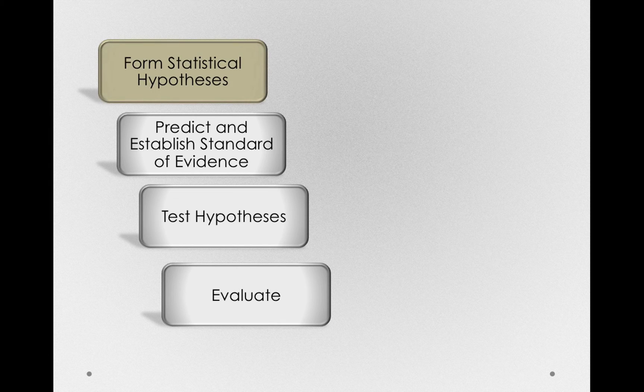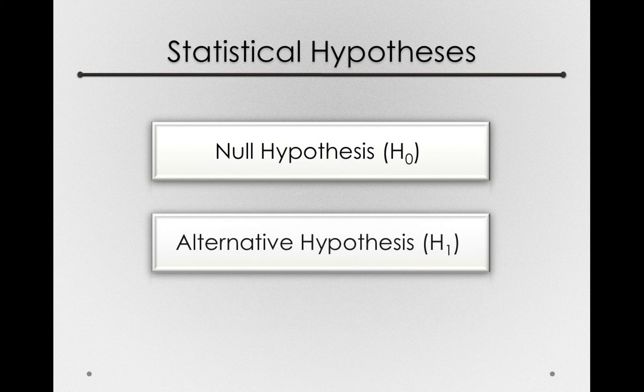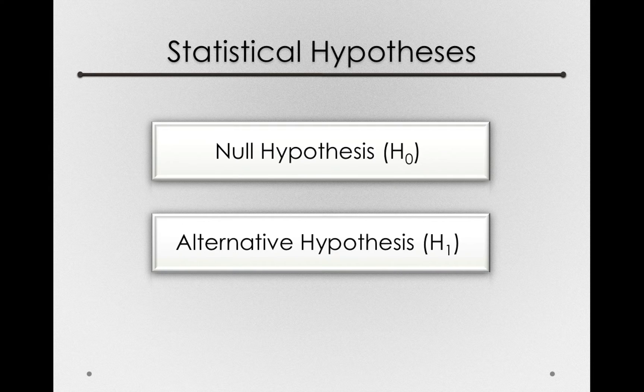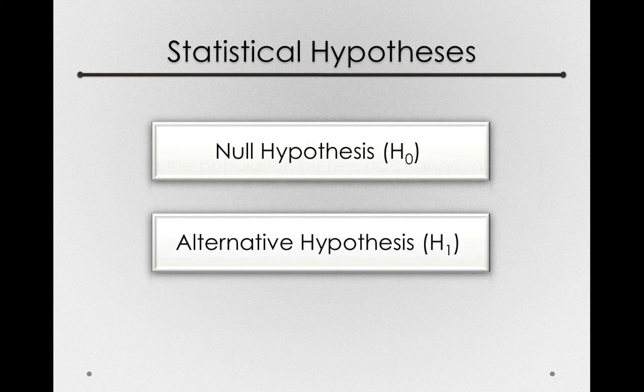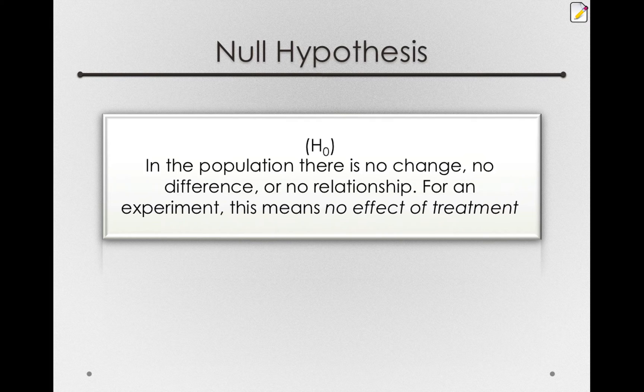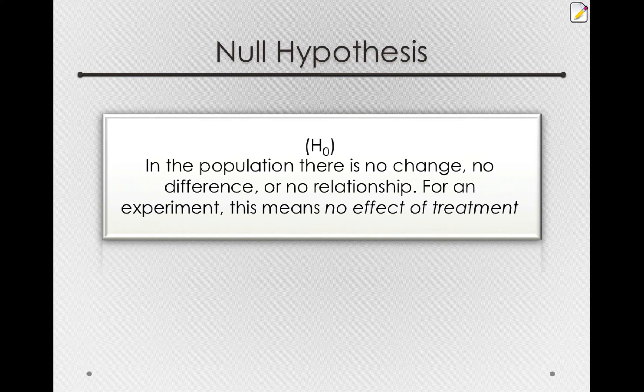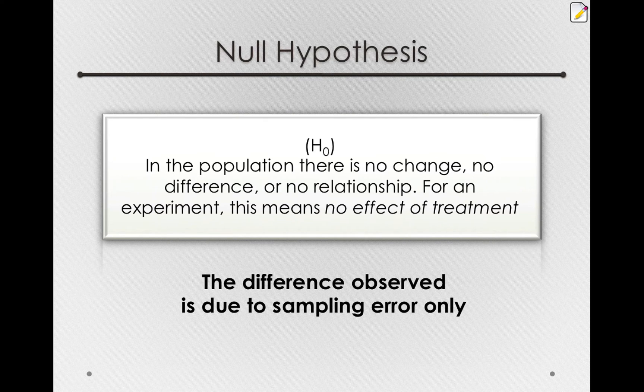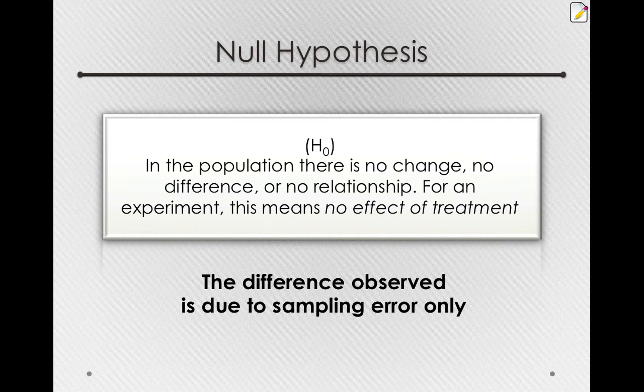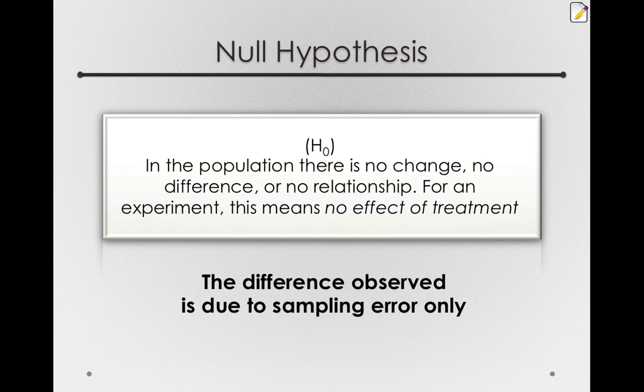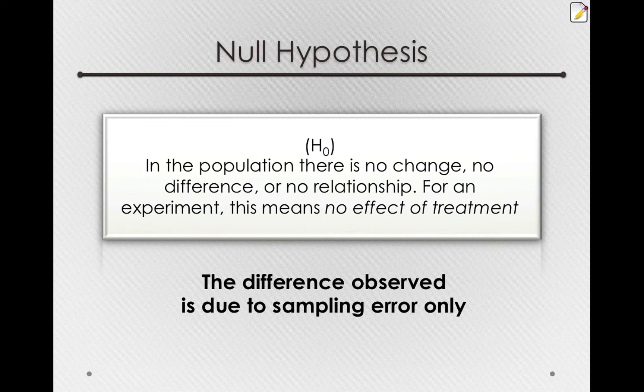Let's begin by forming our statistical hypotheses. Statistical hypotheses come in two varieties: the null hypothesis, also known as H sub 0, and the alternative hypothesis, known as H sub 1. The null hypothesis states something very specific—that in the population, there is no change, no difference, or no relationship for whatever we're measuring. For an experiment, this is akin to saying there is no effect of the treatment we applied. This makes a specific statement: that whatever difference we obtain or observe is due to sampling error only. This is the same thing as that sampling error only explanation, we've just given it a name.